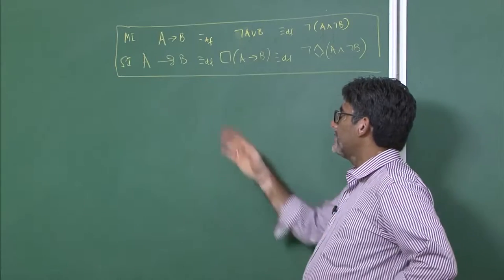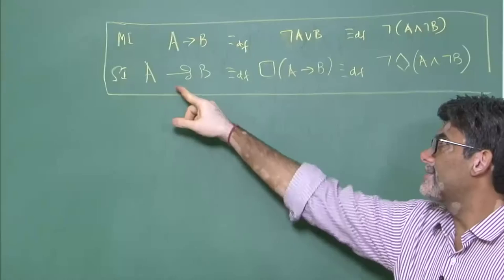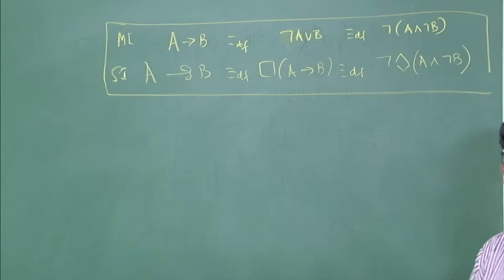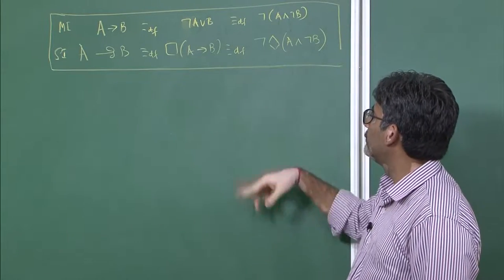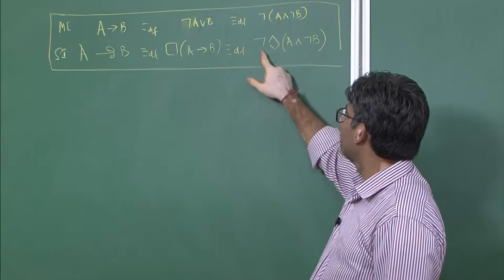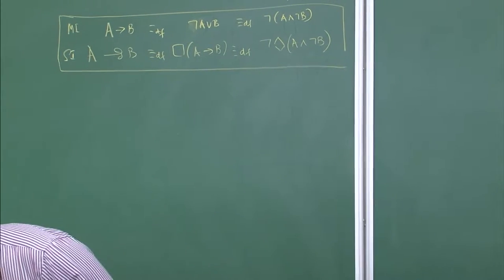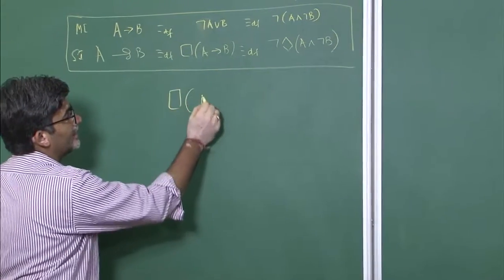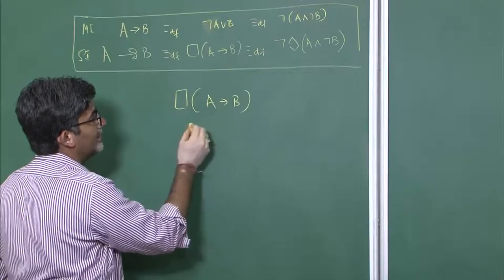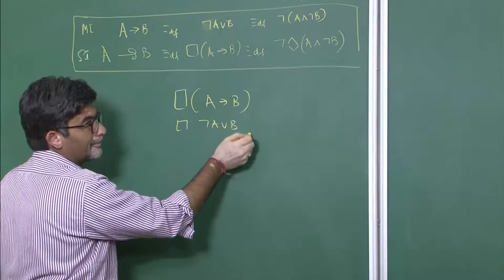In this sense, if A implies B is a material implication, the definition is: it is not the case that A is false, or B is the case — equivalently, it is not the case that A is true and B is false. For strict implication, A strictly implies B — written with a special symbol — is defined as: A implies B is considered necessary, or equivalently, it is not possible that A is true and B is false. This can be written as: not A or B.